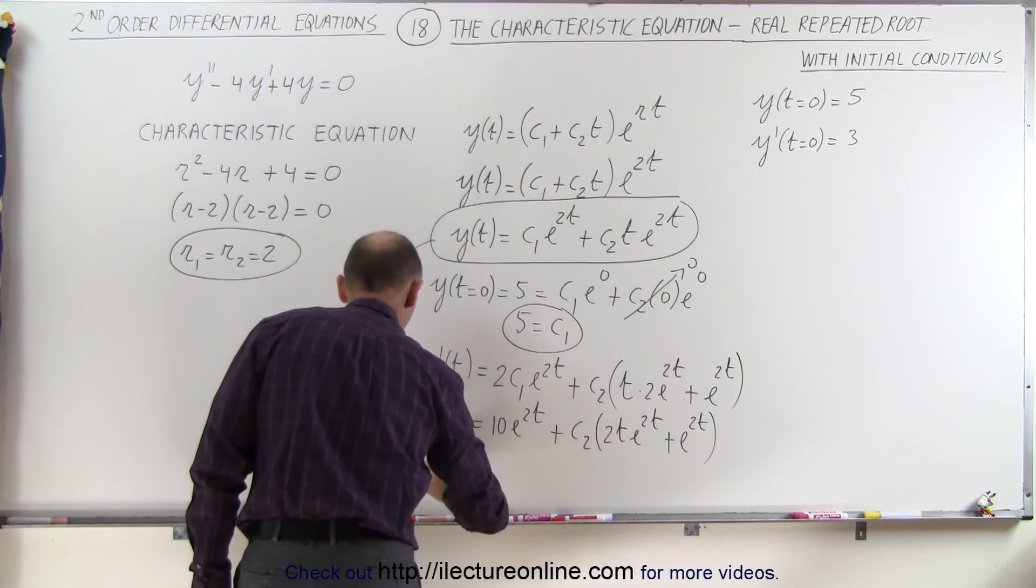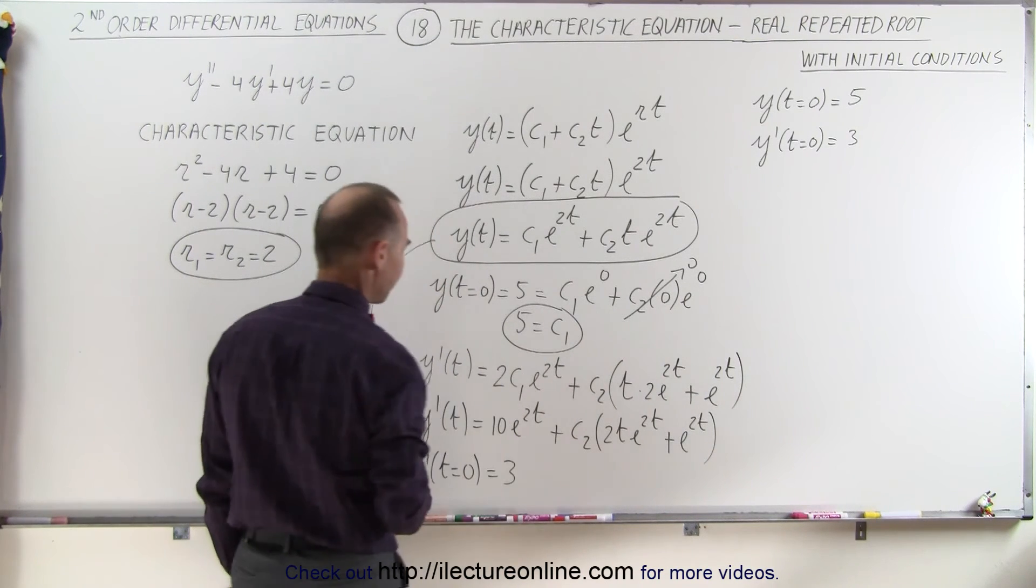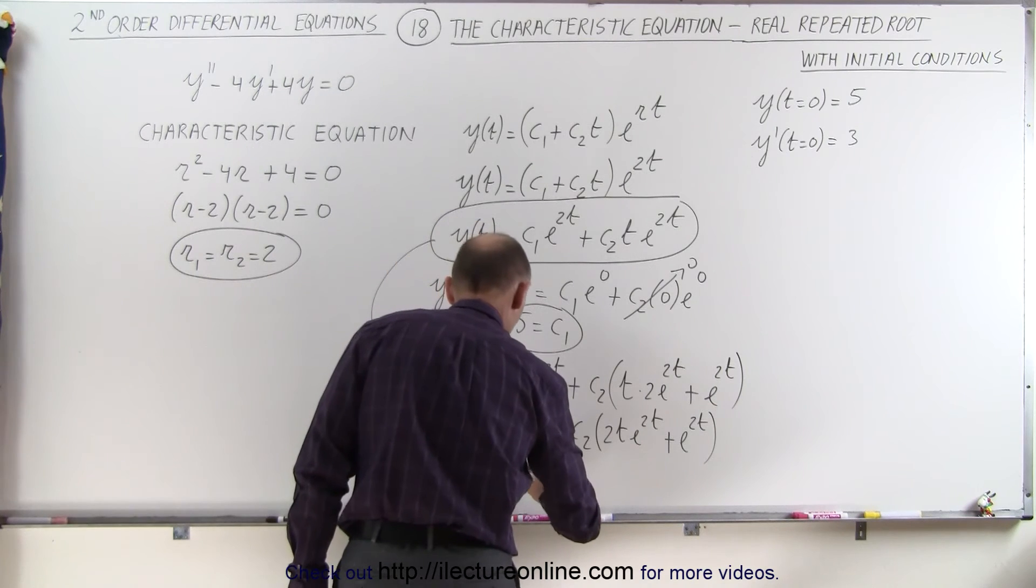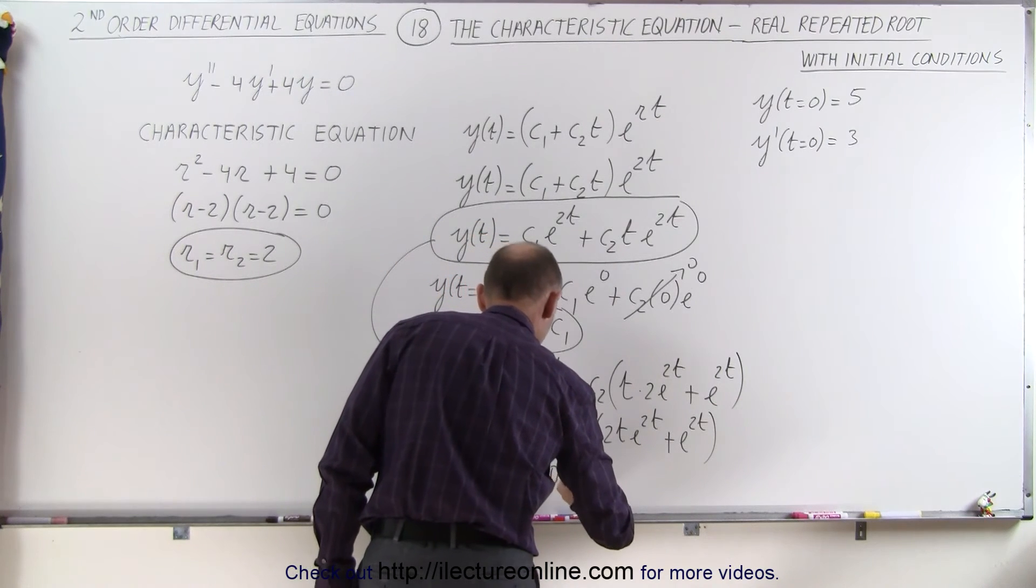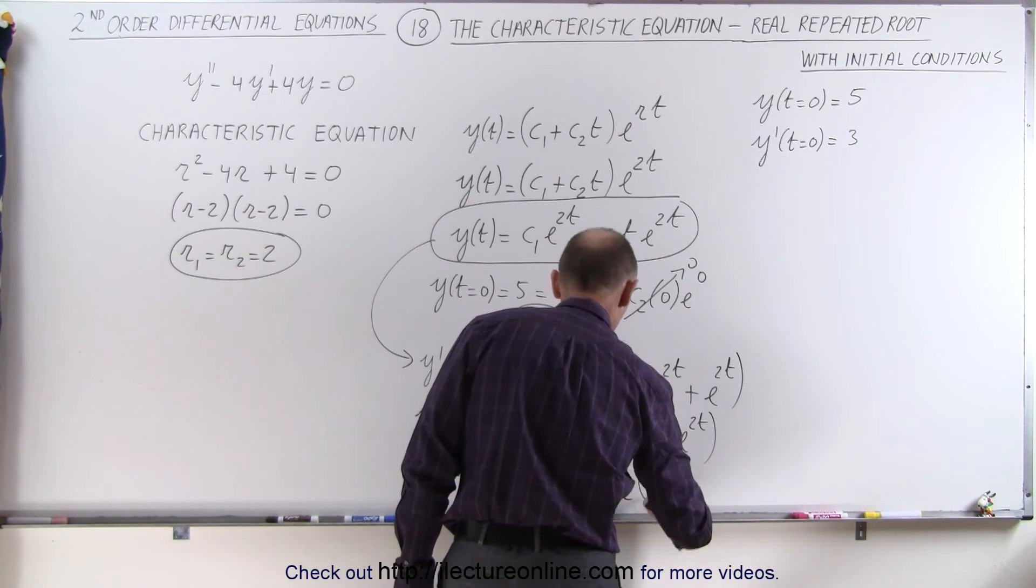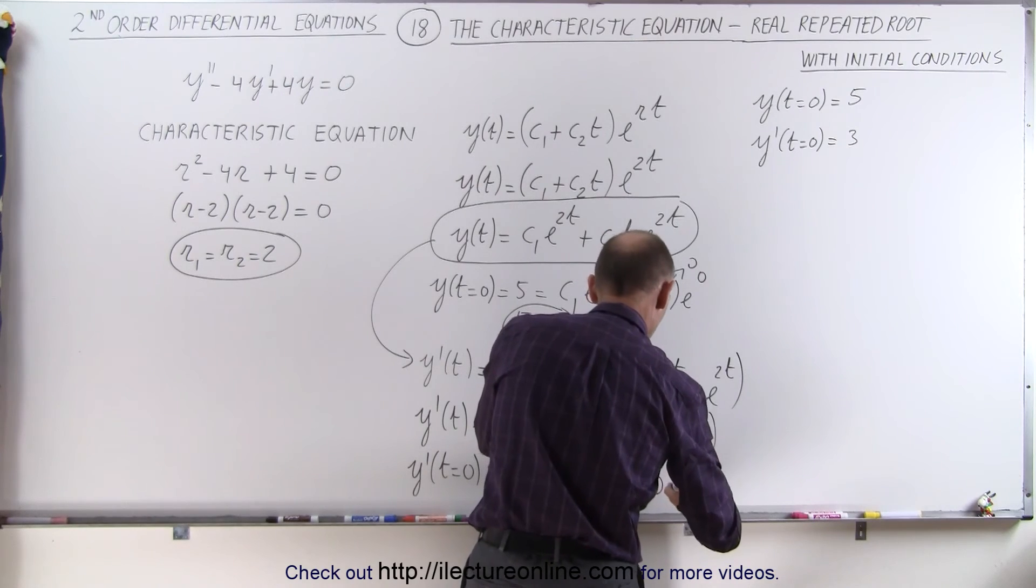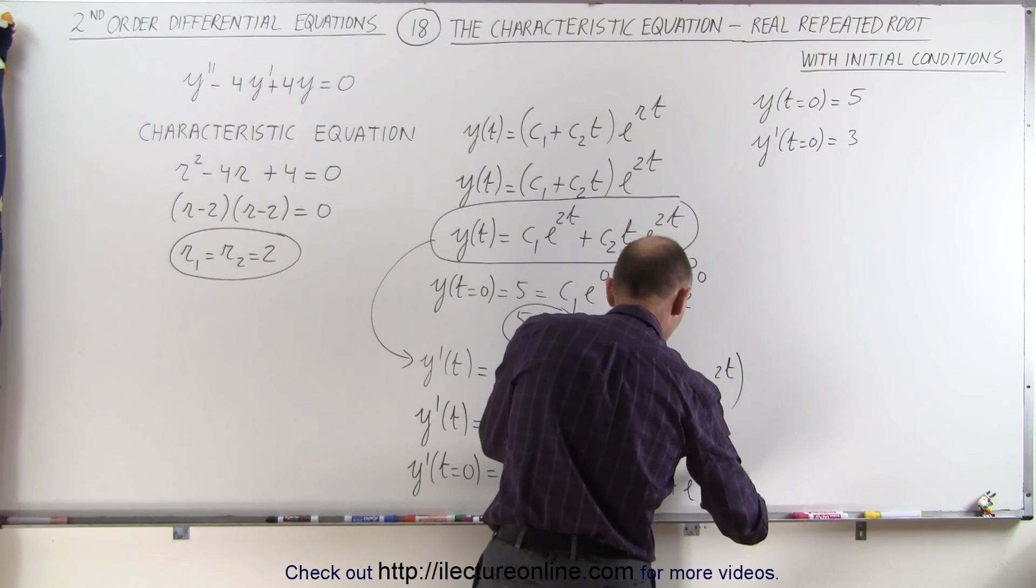y prime when t is equal to 0 is equal to 3, and that is equal to 10 e to the 0 plus c2 times when we plug in a 0 for t we get 0 plus e to the 0.